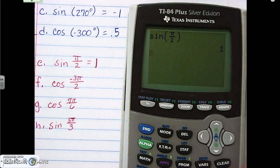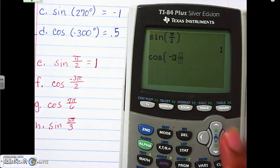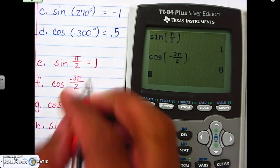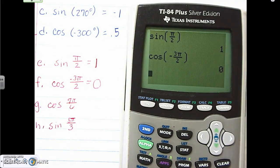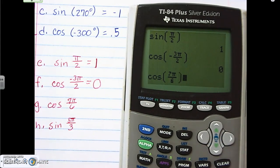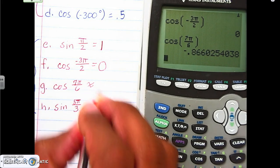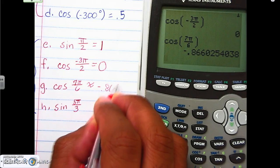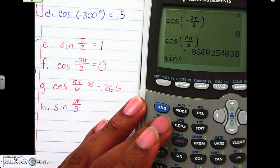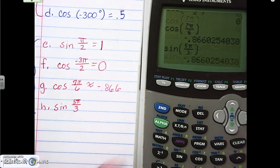So then let's do the next one. Cosine: we get that fraction bar, put a negative in front, and then 3π divided by 2 — we get zero. Then cosine: 7π over 6 — we get this answer to three decimal places, so it's approximately that value. And then sine 5π over 3 — we get this answer again.